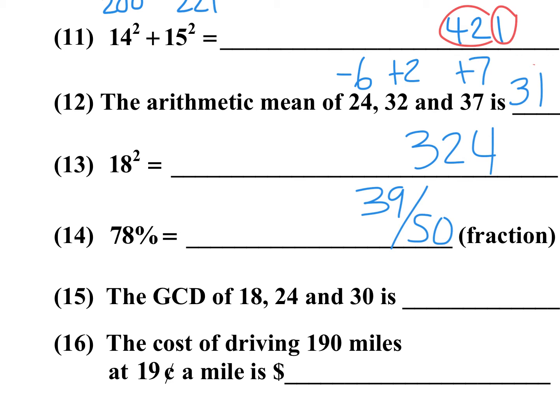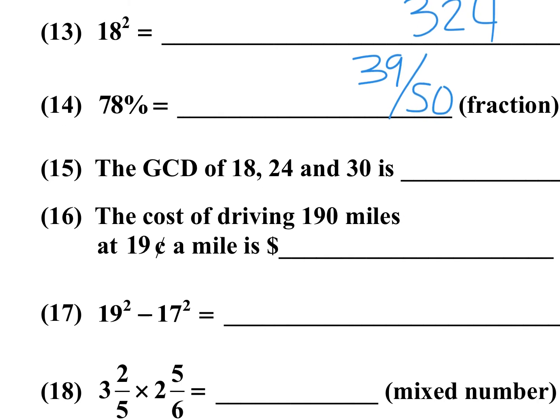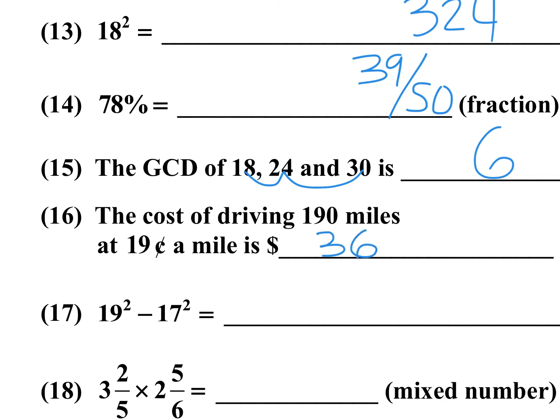Remember, this was TMSCA test number one from October 23rd, 2021 — the first test of the fall. These early problems are simple and basic, as they usually are. Number 15: GCD of 18, 24, and 30 — notice the difference is 6 and 6. Six goes into all of them, so the answer is 6.